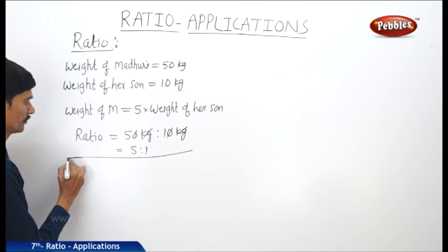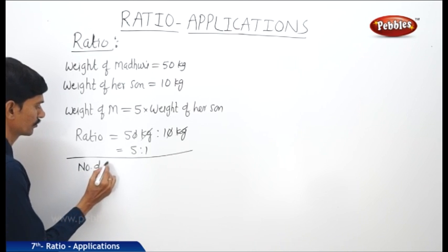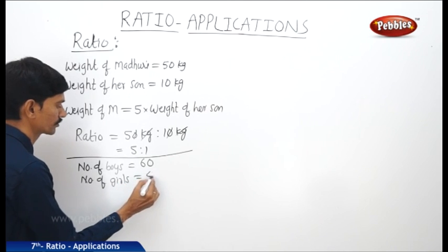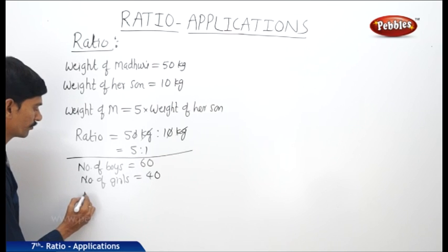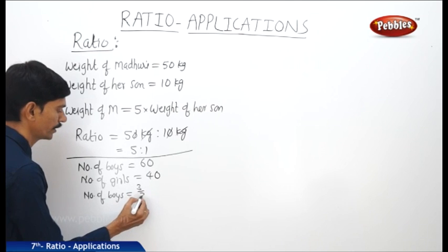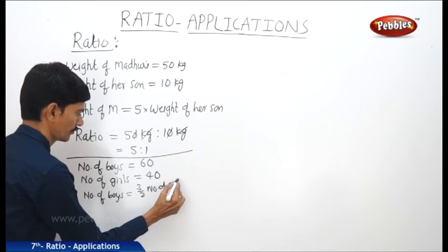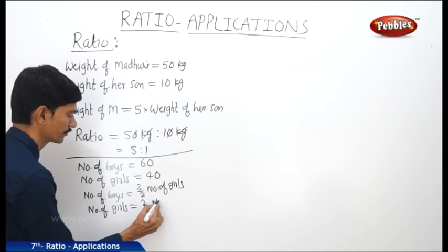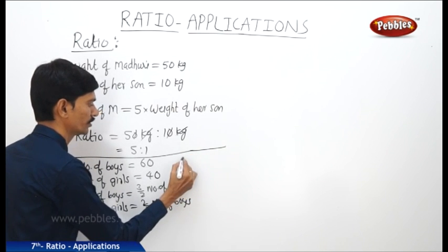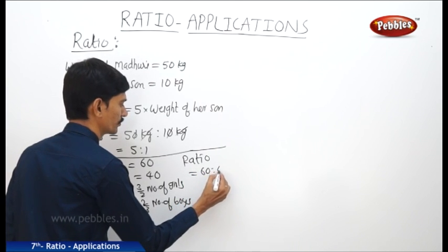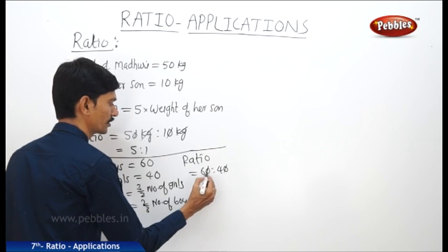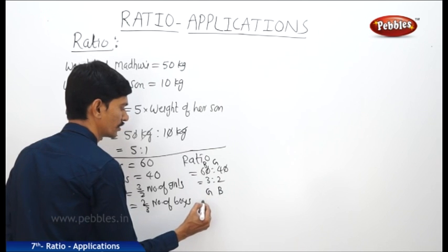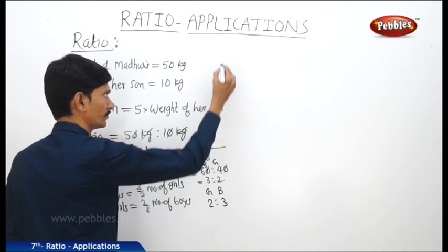In the second example, the number of boys equals 60 and the number of girls in a class equals 40. We can write: number of boys equals 3/2 times the number of girls, or number of girls equals 2/3 times the number of boys. The ratio of boys to girls is 60 is to 40, which simplifies to 3 is to 2. The ratio of girls to boys is 2 is to 3.